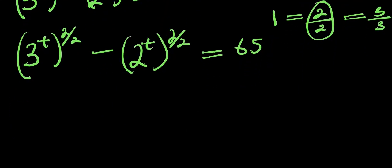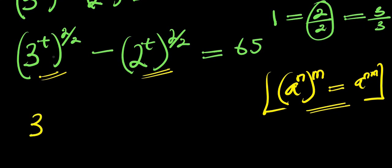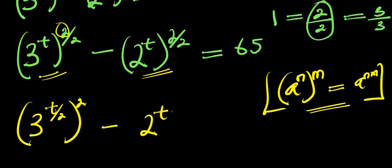We apply the identity: a to the power of n equals a to the power of n times n. Factoring out 1 over 2, we have 3 to the power of t over 2, raised to the power of 2, minus 2 to the power of t over 2, raised to the power of 2, and this equals 65.